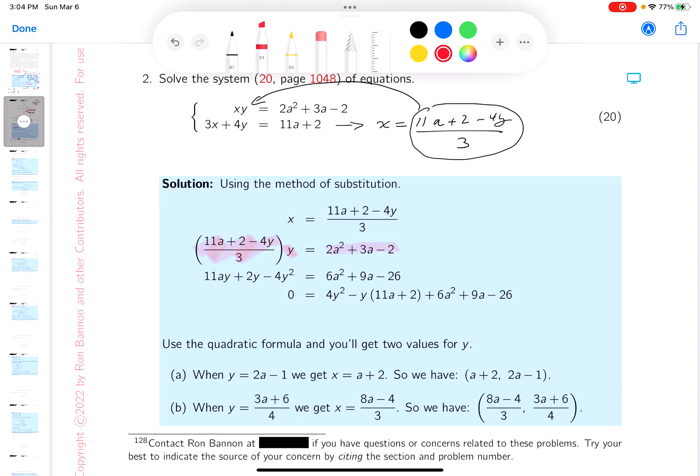The next thing I would do is I'd multiply both sides by 3 and distribute the y on the left-hand side. And if you did that, you would get 11ay plus 2y minus 4y squared is equal to, well, I'm multiplying by 3. So 6a squared plus 9a minus 6.